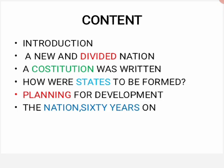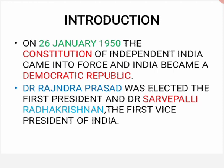As you know, India got independence in 1947. When we got independent, we had no rules, no regulations, no directions, no leaders — and we needed them. Then on 26 January 1950, the Constitution of independent India came into force and India became a democratic republic. Democratic republic means log ki government, elections honge, aur log hi apne representatives ko chunenge.